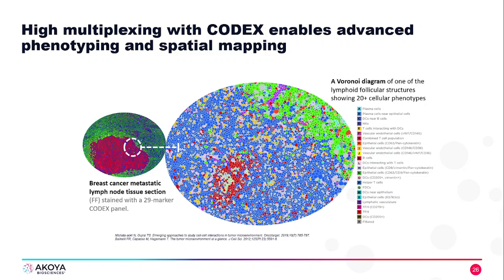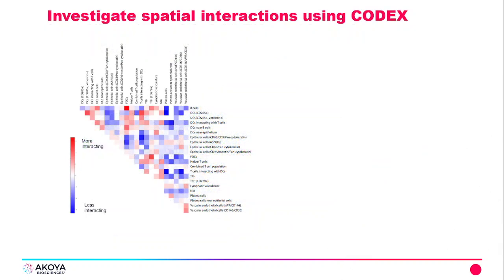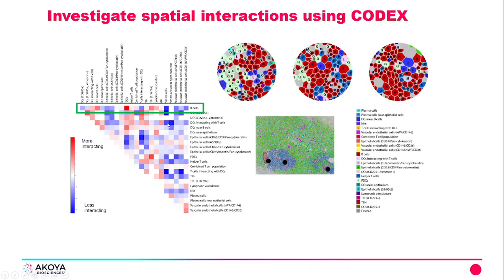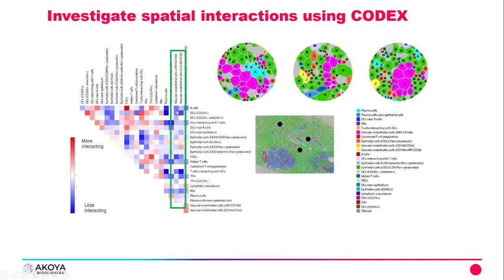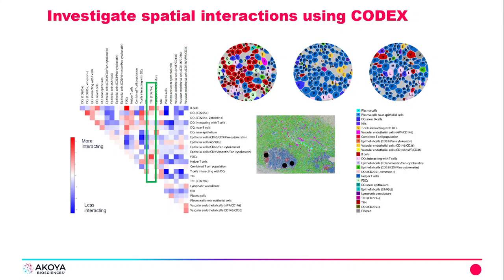Lastly, we're able to use the Codex Multiplex Analysis Viewer for spatial interactions—understanding the likelihood of spatial proximity and the number of interactions that we're seeing. Red indicates a high number of interactions between follicular dendritic cells and B cells, whereas blue indicates a low number of interactions between vascular endothelial cells and B cells. It's these spatial interactions that allow us to draw those biological conclusions that we wouldn't be able to see without Codex.